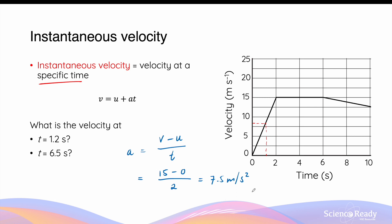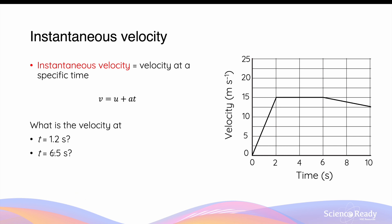Using this acceleration with time t = 1.2 seconds: v = 0 + (7.5 m/s² × 1.2 s), which gives an instantaneous velocity of 9 meters per second. Now, what about the instantaneous velocity at t = 6.5 seconds? That point is in the third interval, shortly after the runner started to decelerate.